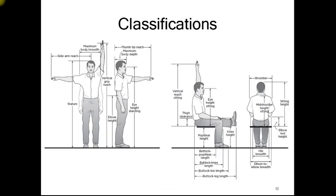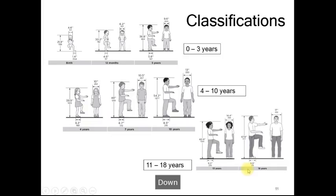Here are some of our classifications. We can see the maximum body breadth, sidearm reach, thumb-to reach, maximum body depth, popliteal height, and knee height — which is different from popliteal height. That also gives us thigh clearance, which is another area designers need to understand — the space between a countertop and a chair so that someone can clear there comfortably.